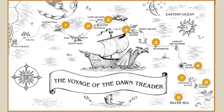Then they land at Deathwater Island. That's where they find Lord Restimar, who had been turned into gold by the lake. When they discover that this lake turns objects into gold, Caspian wants to claim the island in the name of Narnia, but Edmund says he's going to claim it — leading to a fight between Caspian and Edmund. It looks like they're under a greed spell. But then they catch a vision of Aslan on the ridge, realize what they're doing, immediately repent, and decide to call the island Deathwater Island because it just leads to death.